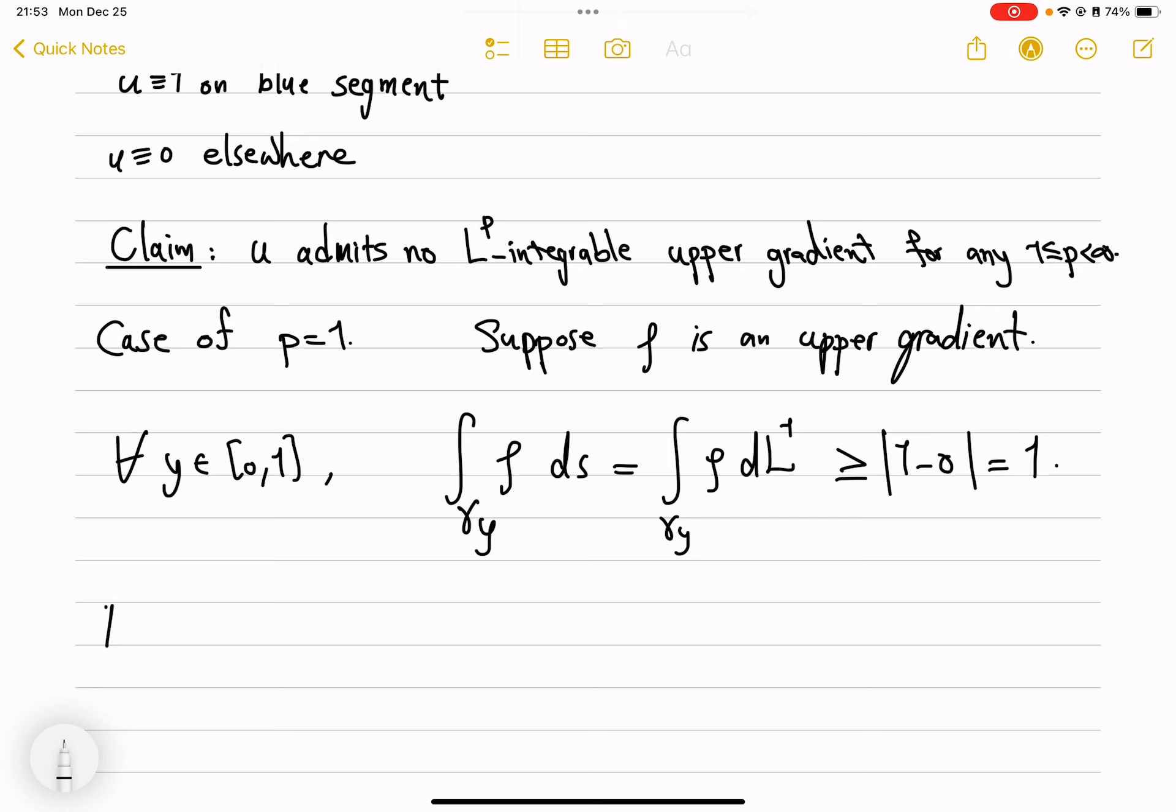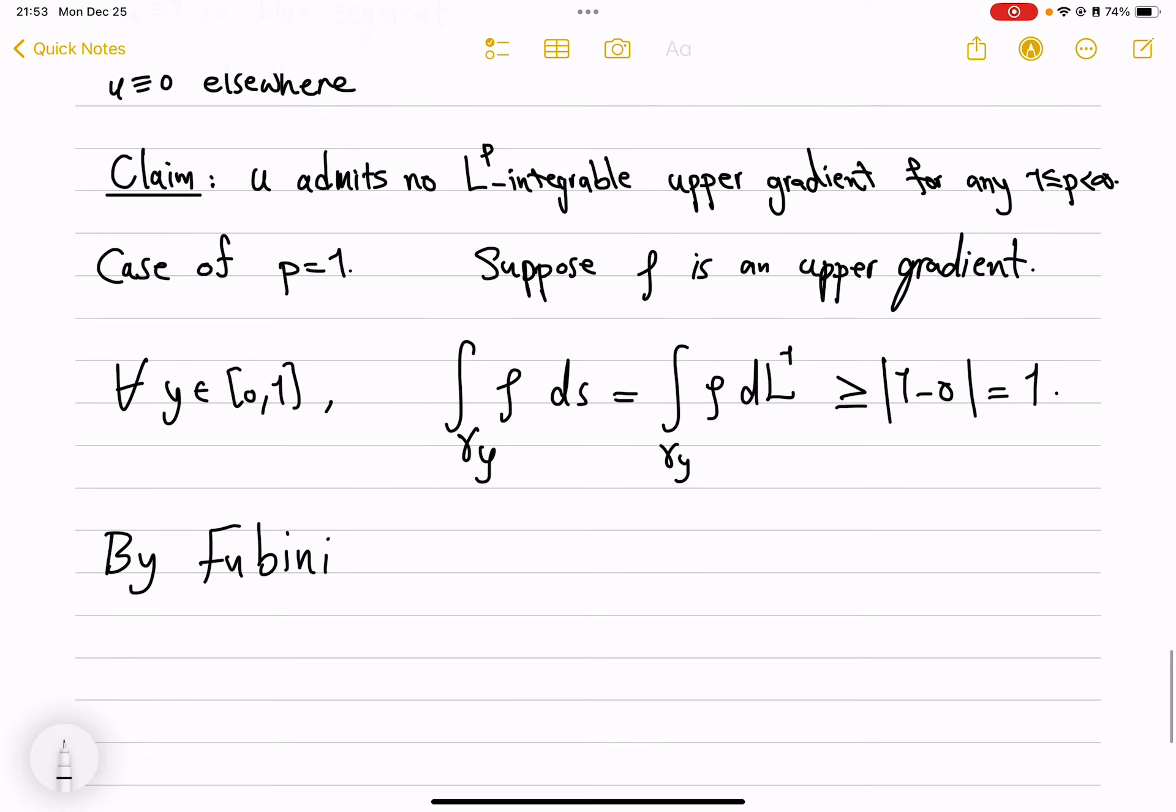Then what we did was that by Fubini, integral from 0 to 1 of gamma y rho ds dy, this is none other than integral of rho with respect to Lebesgue L2 measure on this box that is created with this narrow strip. And this is integrating 1, so again, should be bigger than 1.